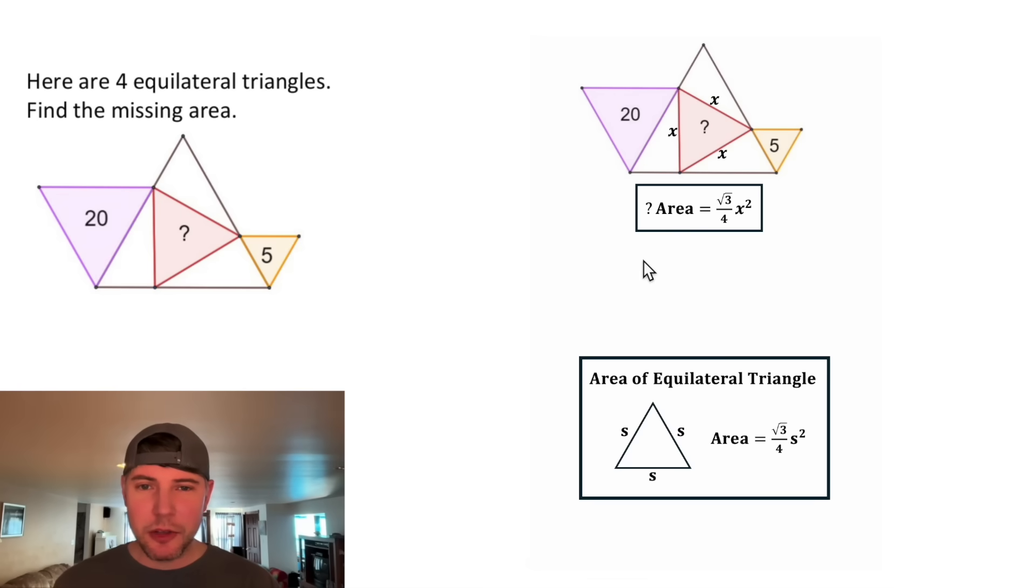We're not done with these notes yet. We can use them to find the side lengths of these two triangles. Let's call this side length y and this side length z. Let's use these equations to find y and z.